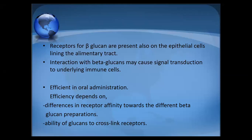Receptors for beta-glucan are also present on the epithelial cell lining of the alimentary tract. Beta-glucan can bind to gut-associated lymphoid tissue (GALT) receptors, further interacting via signal transduction to induce underlying immune cells. When given through oral administration, efficiency depends on differences in receptor affinity towards different beta-glucan preparations. Beta-glucans have the ability to cross-link receptors. Commercially available forms of glucan include MacroGard and Beta-Fectin, prepared from Saccharomyces cerevisiae.